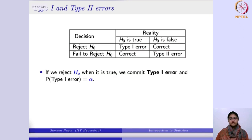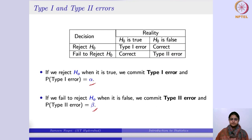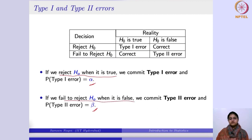The probability of committing a Type 1 error is denoted alpha (α). Alpha is also called the level of significance. The probability of committing a Type 2 error is denoted beta (β). To be precise: alpha is the probability of rejecting H₀ given that H₀ is true, and beta is the probability of failing to reject H₀ when it is false.